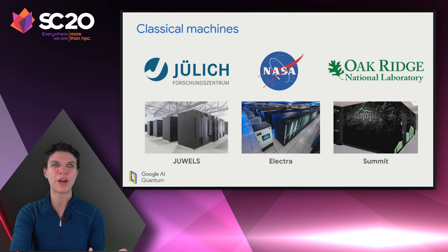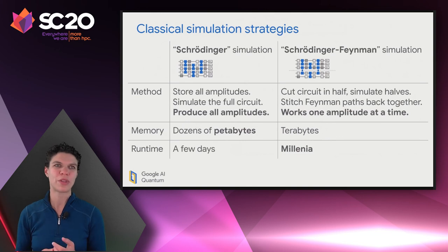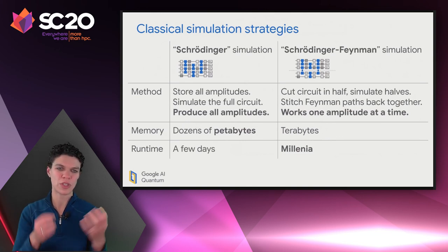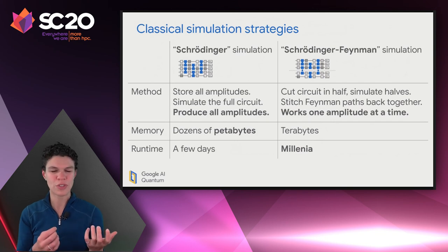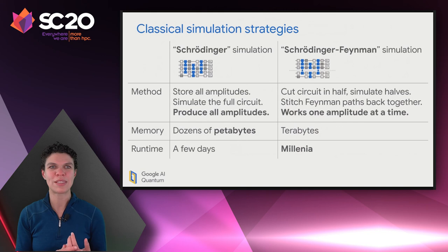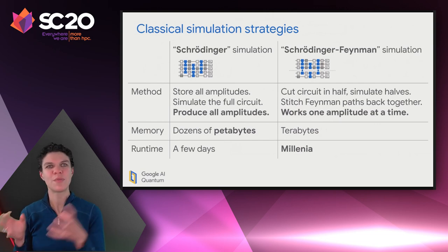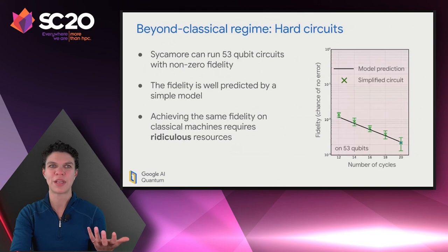The classical verification done so far has been collaborative work with the Forschungszentrum in Jülich, NASA, and Oak Ridge National Laboratory, using a couple of different simulation strategies. One we call the Schrödinger simulation actually stores all of the amplitudes of the quantum state, requiring very large amounts of memory. For the largest circuits we've measured on our quantum computer, it would require dozens of petabytes over a few days for a classical computer to follow that simulation. Instead, we come up with an alternative approach where we sacrifice space for time — cutting the circuit into parts, simulating them, and stitching them back together — but with only a few terabytes of memory, the runtime would now take thousands of years.